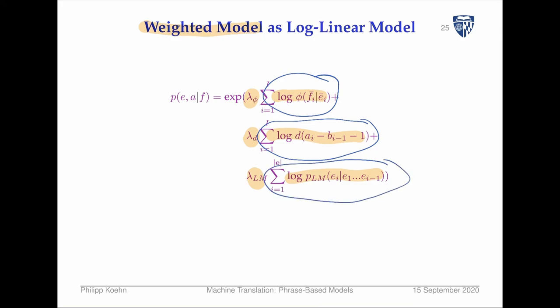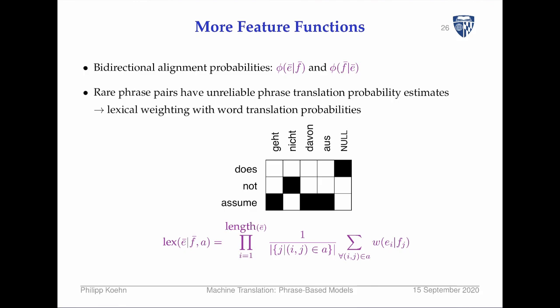We have three features and can weight them. Why stop there? Why not have more features? There are several more features commonly used. One is motivated by the problem that rare phrase pairs have unreliable phrase translation probability estimates.